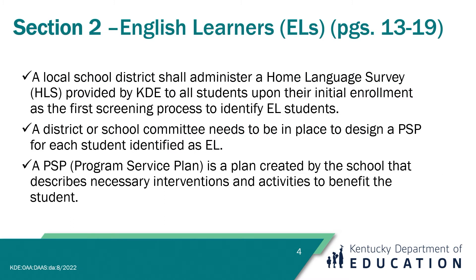Section 2 of the Inclusion of Special Populations Regulation focuses on students who are identified as English Learners or ELs. This information can be found on pages 13 through 19 of the regulation document. Students who enter school with English as a second language will be administered the home language survey as part of the screening process. If a student is determined to be an EL student, a district or school community must convene to design a Program Service Plan, or PSP — the plan that describes the necessary interventions and instructional activities for the benefit of the student.